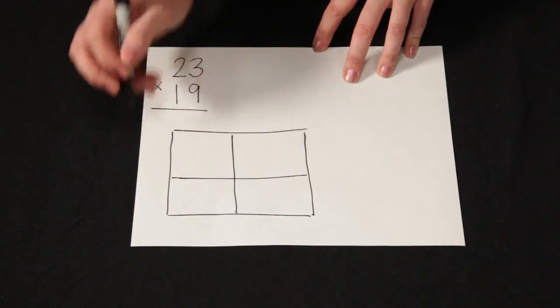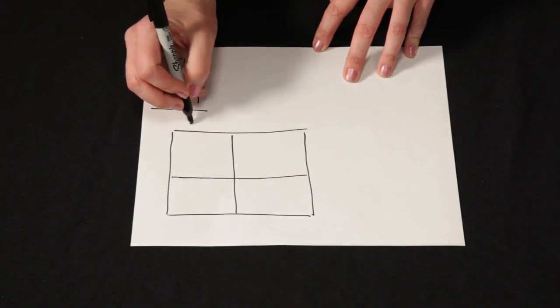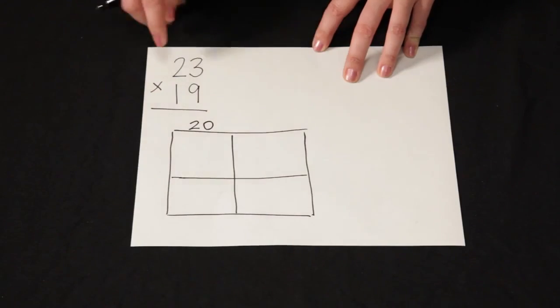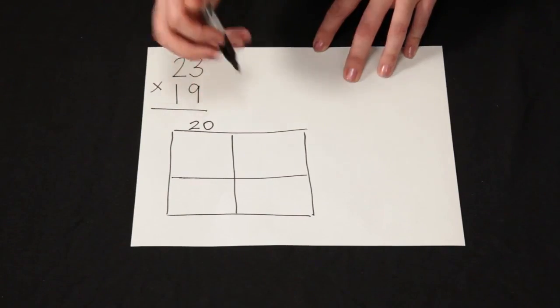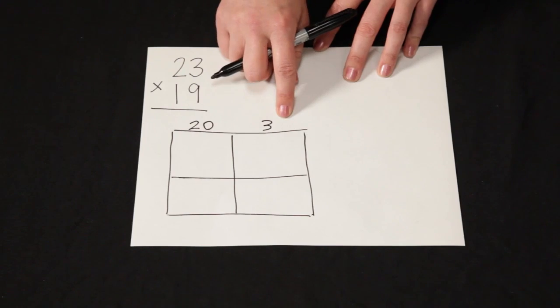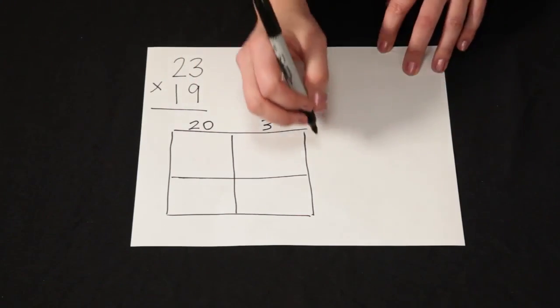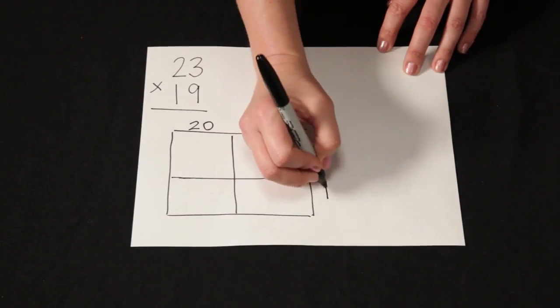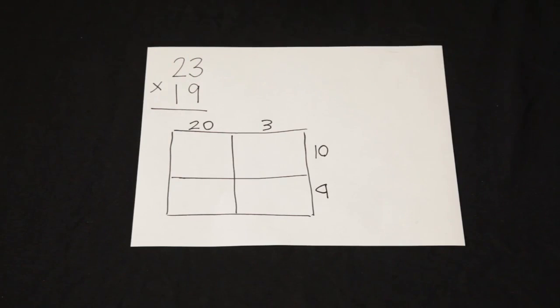Here I'm going to show 23, and I'm actually going to write out 20, because two tens represents 20, and 3. So this is the expanded form of 23. And then I'm going to write over here 10 and 9, that's the expanded form of 19.